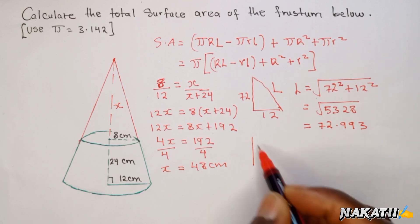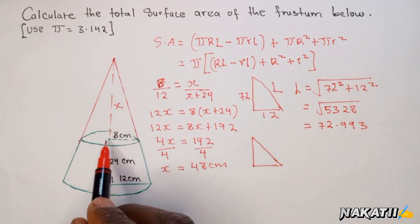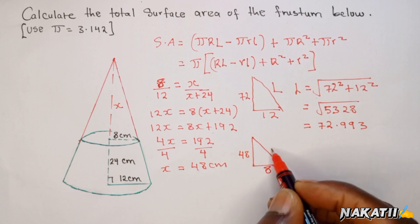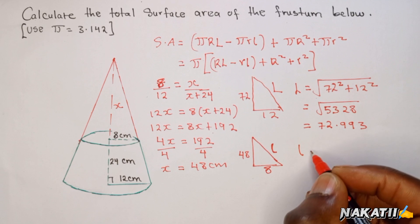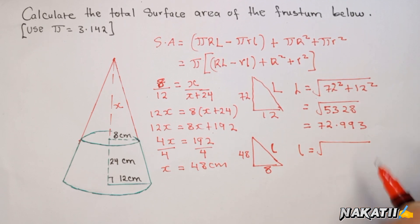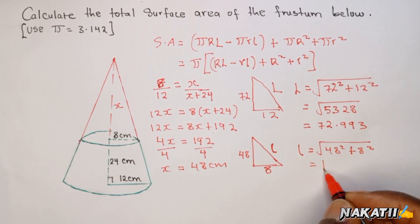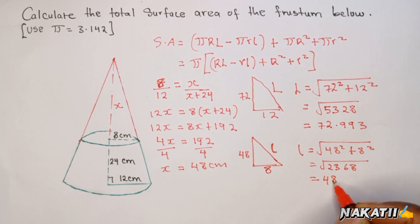Doing the same, we extract the smaller triangle. From here to here is 8, and x is 48. Using Pythagoras to get small l, the slant height of the smaller cone: l = √(48² + 8²) = √2368. Taking the square root using a calculator gives small l = 48.662.